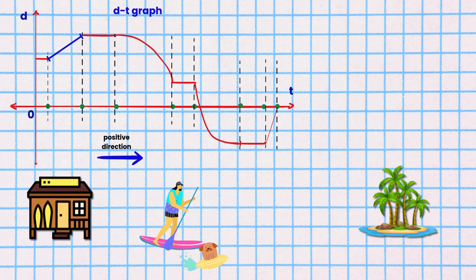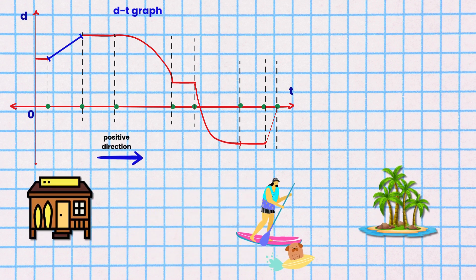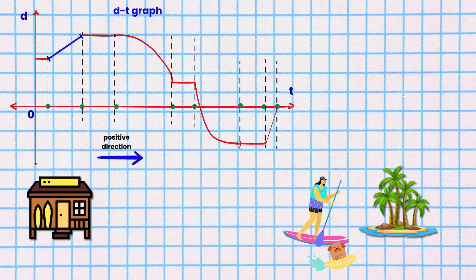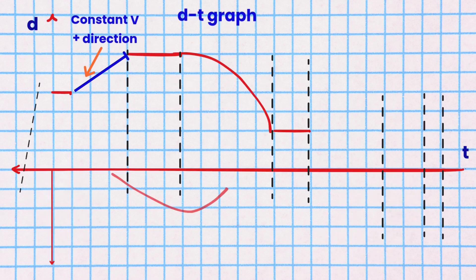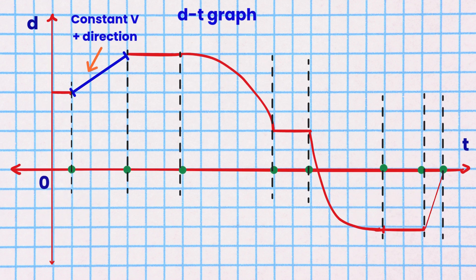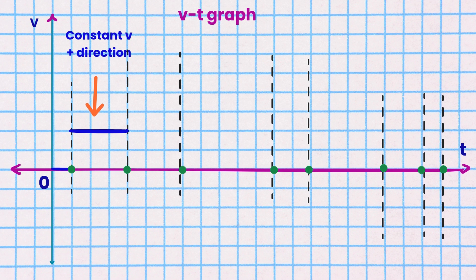Segment 2. Mole and Electron travel forward from the paddle board shop to Island A. They travel in the positive direction at a constant velocity. This is shown as a horizontal line in the VT graph above the time axis.